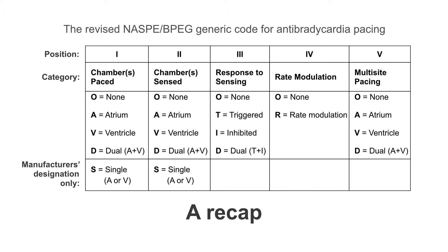Let's have a recap of the mode code. Looking at position one, this is the chamber that is paced. So in a VOO device, we would be pacing in the ventricles. In an AOO device, the atrium. And in a DOO, we would be pacing in both.